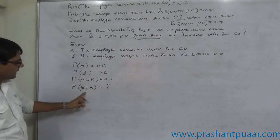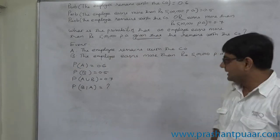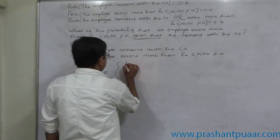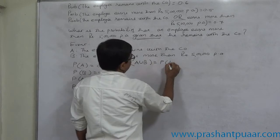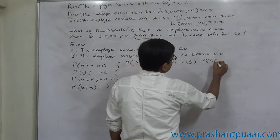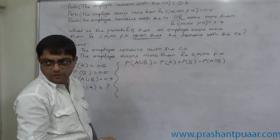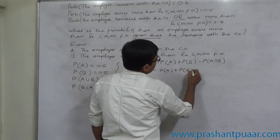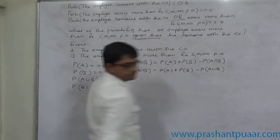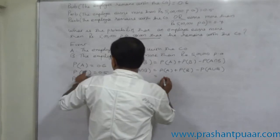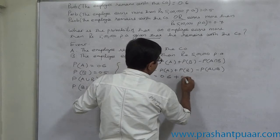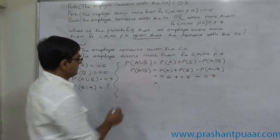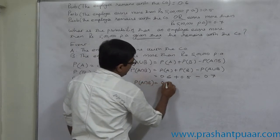To calculate P(B|A), we first require P(A ∩ B). To find it, we use the addition law: P(A ∪ B) = P(A) + P(B) − P(A ∩ B). Rearranging, P(A ∩ B) = P(A) + P(B) − P(A ∪ B) = 0.6 + 0.5 − 0.7. Therefore, P(A ∩ B) equals 0.4.